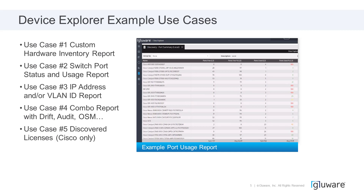Use case number two is enabled by the advanced discovery — looking at port statuses of whether a port is up or down, admin down, or potentially not in use, and being able to generate a usage report. This is very useful for capacity planning and understanding the availability you have to expand in campus switches or data centers. Use case three is about looking at resource assignments like IP addressing and VLAN assignments, and generating a report of IP addresses or VLAN IDs used in your environment, which you can correlate with things like IPAMs.